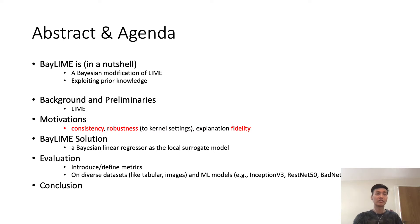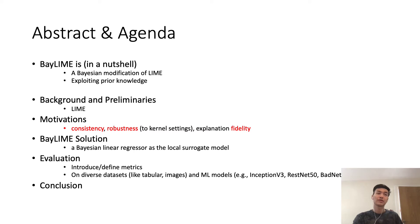Then we evaluate our BEI LIME with an extensive set of experiments. We introduce and define some new metrics for those three properties. We conduct experiments on diverse data sets like tabular data and image, and also a variety of machine learning models. Finally, we conclude BEI LIME with some take-home messages.